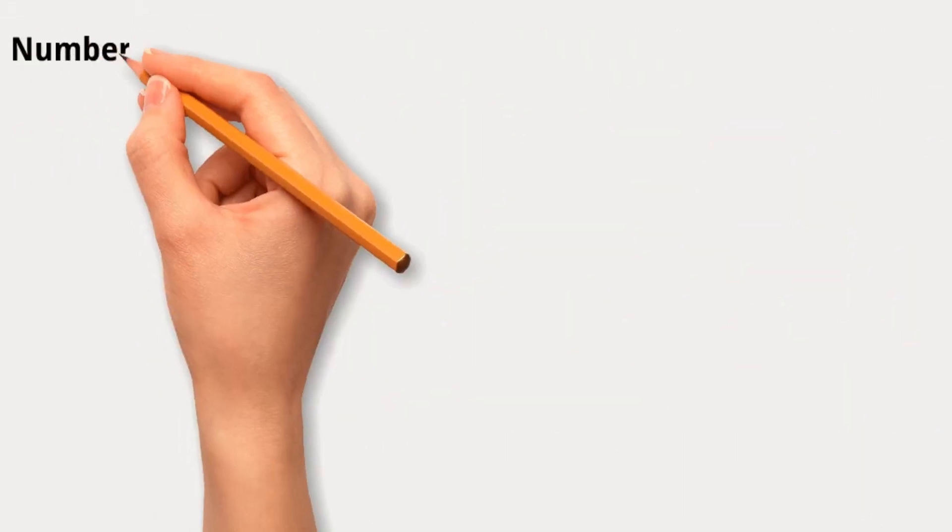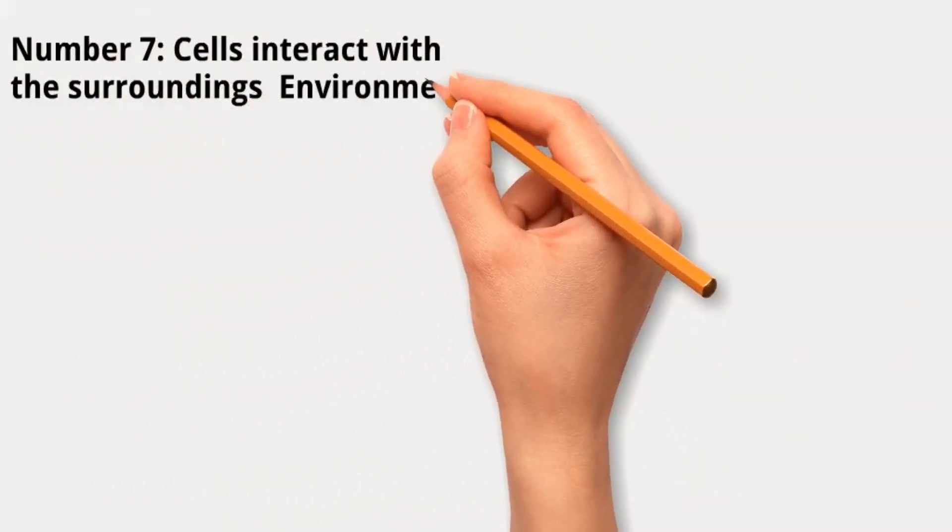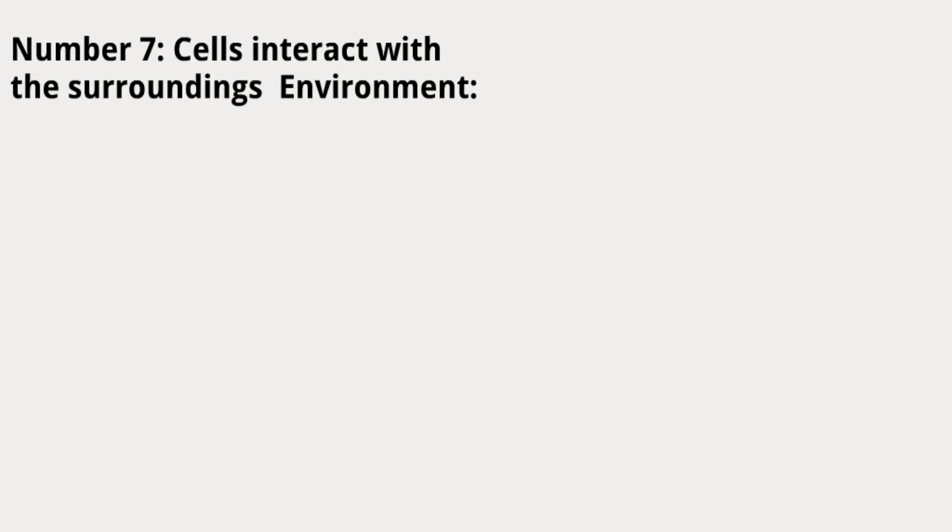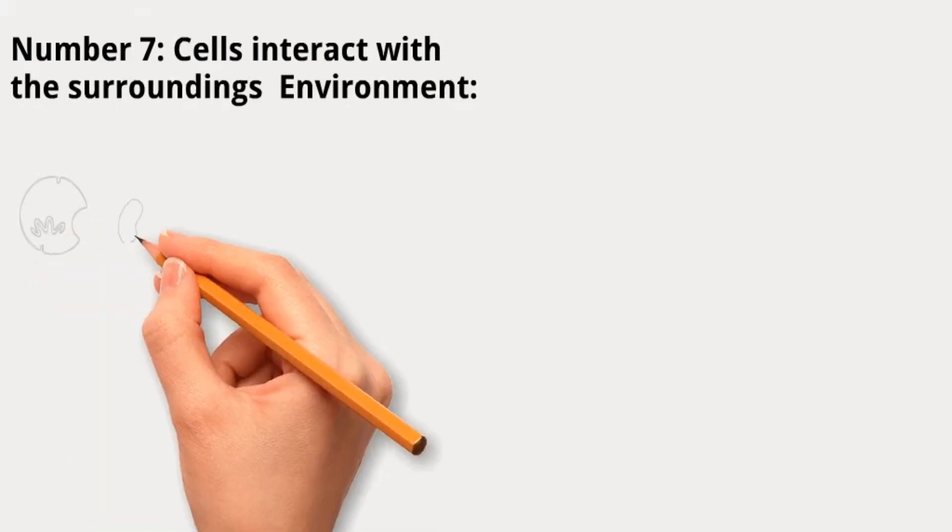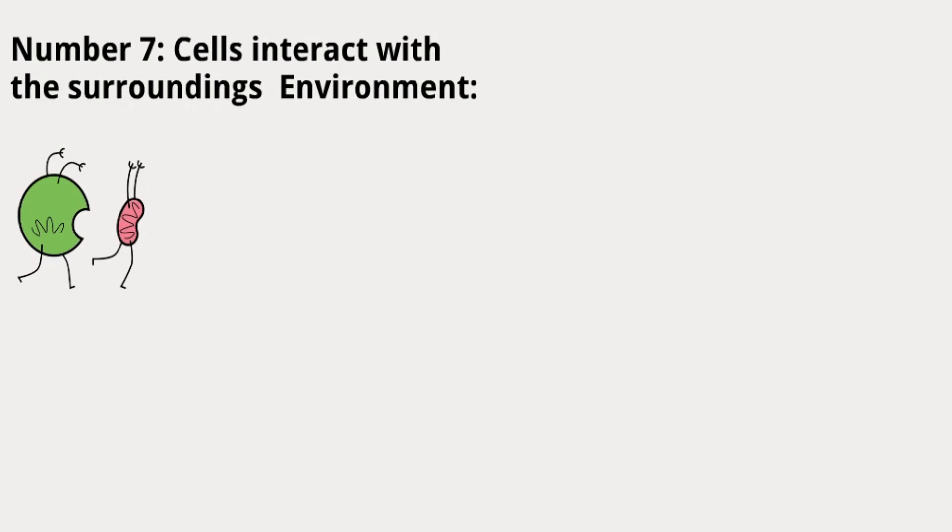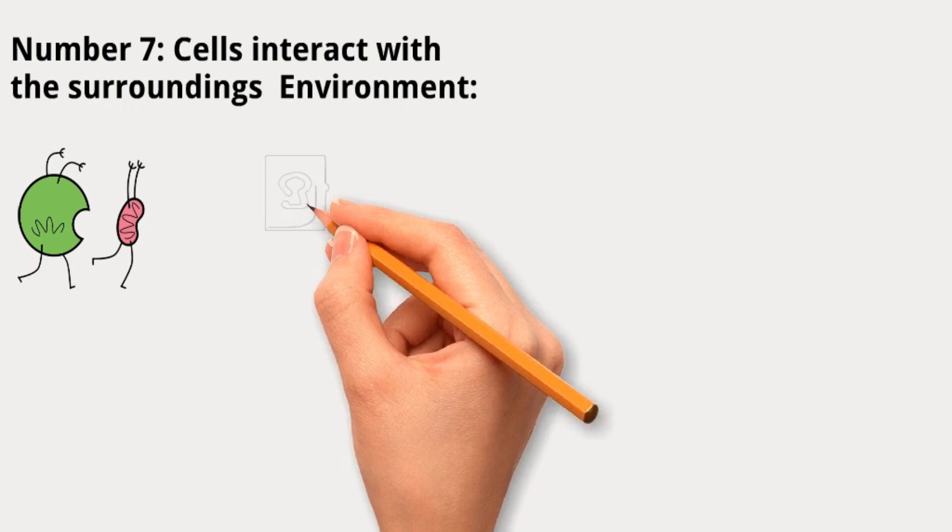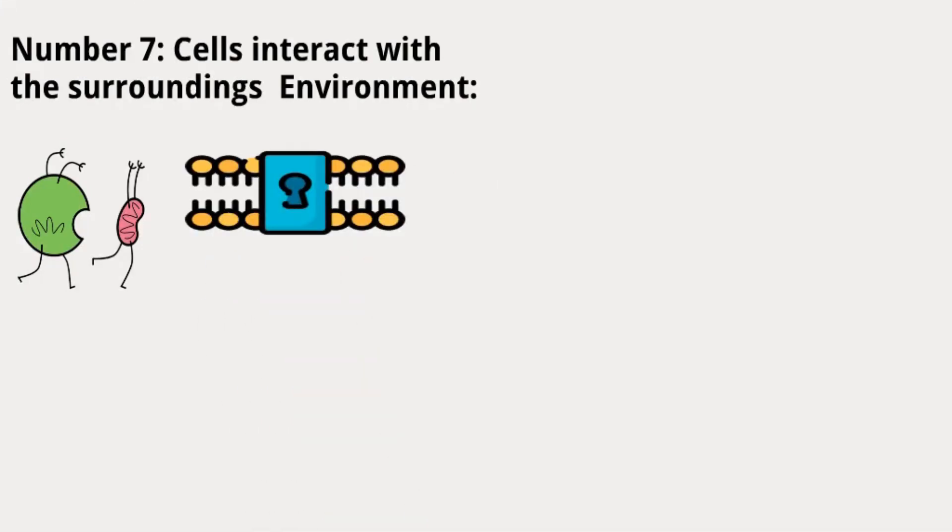Number 7: Cells interact with the surroundings environment. Cells can react to their surroundings. Some single-celled organisms move away from obstacles or toward sources of food. In multicellular organisms, like plants and animals, cells have specific receptors on their surfaces that allow them to respond to various substances in their environment.